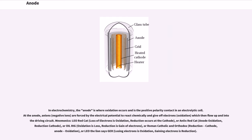In electrochemistry, the anode is where oxidation occurs and is the positive polarity contact in an electrolytic cell. At the anode, anions (negative ions) are forced by the electrical potential to react chemically and give off electrons (oxidation), which then flow up and enter the driving circuit. Mnemonics: LEO red cat (Loss of Electrons is Oxidation, Reduction occurs at the Cathode).